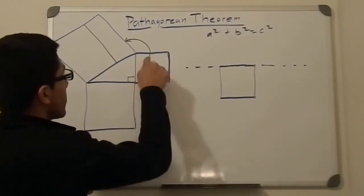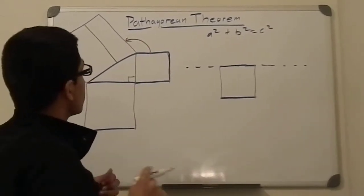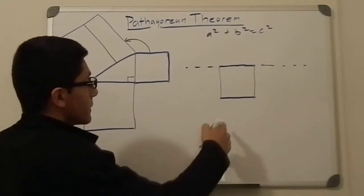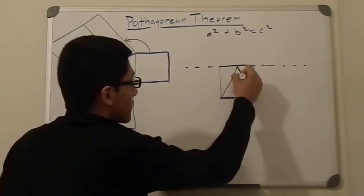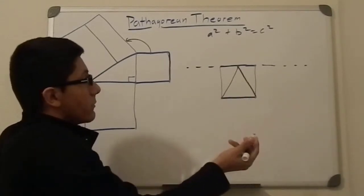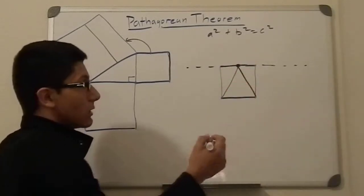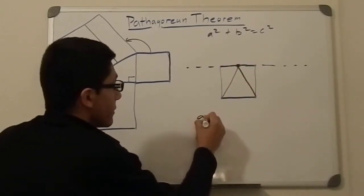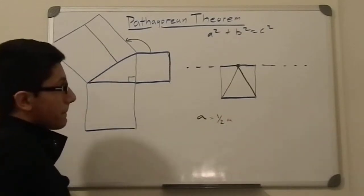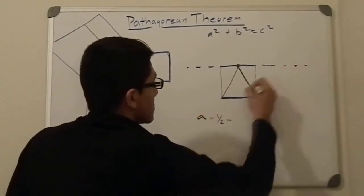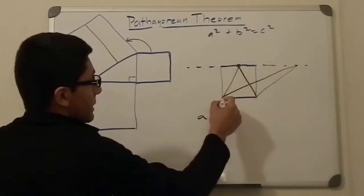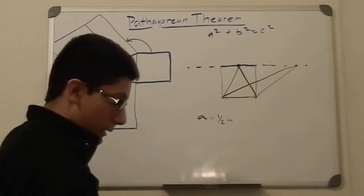To prove this, we first have to accept another theorem: a triangle that shares a base with any quadrilateral and has the same height as that quadrilateral will have an area equal to one half the area of the quadrilateral. We could draw this in different ways and it still holds true, because it has the same height and shares the same base.